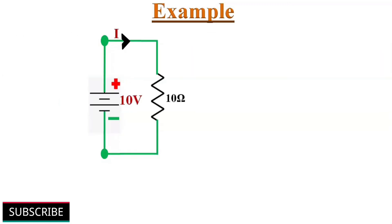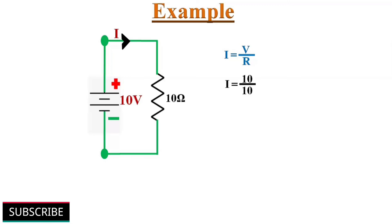Now the circuit has a 10-ohm equivalent resistor connected to a 10-volt voltage source. According to Ohm's law, current I equals V/R, which is 10/10, giving 1 ampere flowing through this circuit. This is how we can solve complex resistor circuits by simplifying from the back end of the circuit.